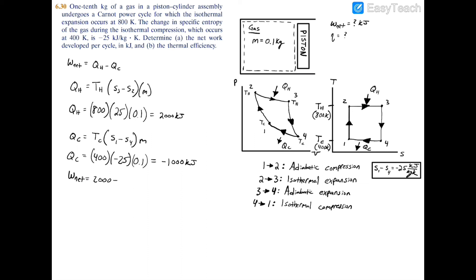If you leave Q_c as negative, you add it. But since I chose to subtract Q_c in my initial formula, I'll subtract 1000 kJ. This gives W_net = 1000 kJ.